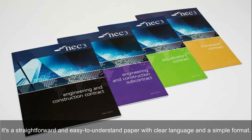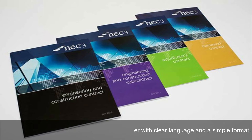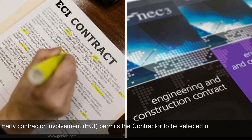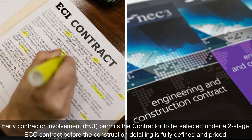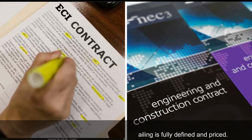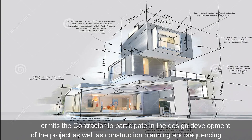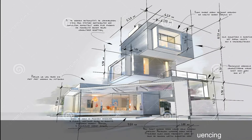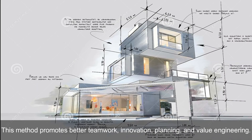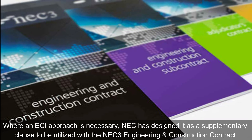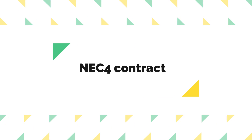It may be utilized in a wide variety of commercial scenarios for a range of jobs and settings. It is a straightforward and easy-to-understand document with clear language and a simple format. Regarding the difference between NEC and ECI: ECI permits the contractor to be selected under a two-stage ECC contract before construction detailing is fully defined and priced, allowing the contractor to participate in design development, construction planning, and sequencing. Where an ECI approach is necessary, NEC has designed it as a supplementary clause to be used with the NEC 3 Engineering and Construction Contract.